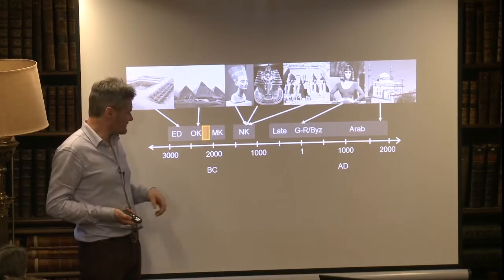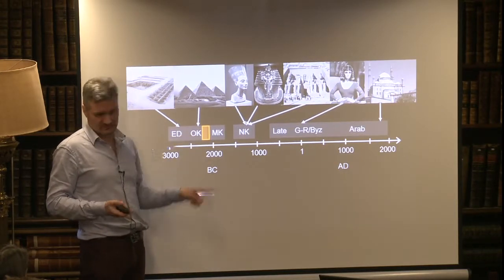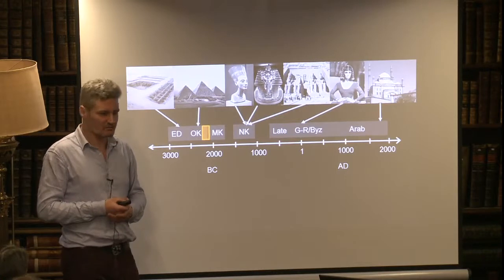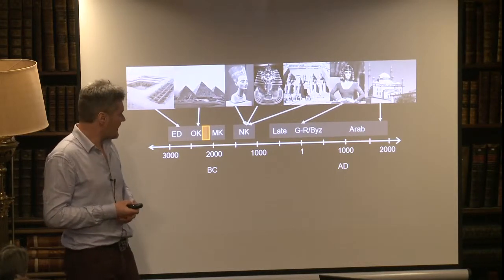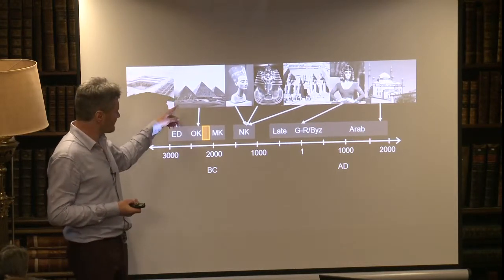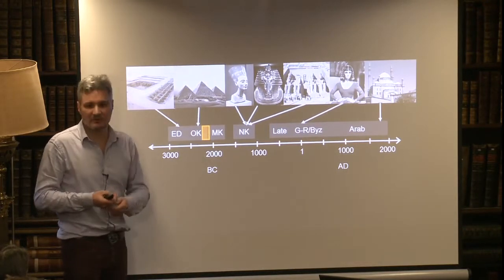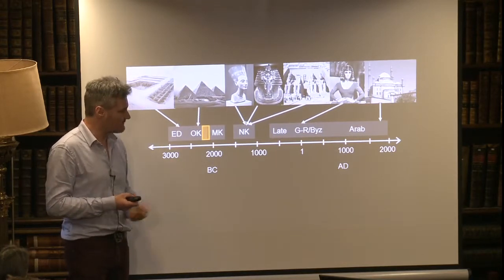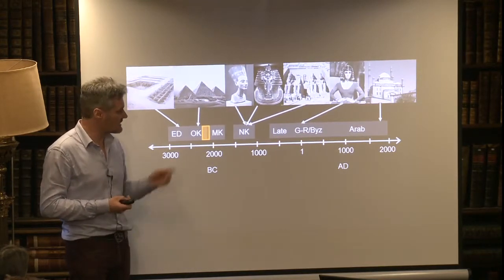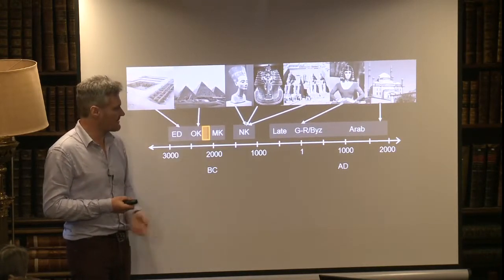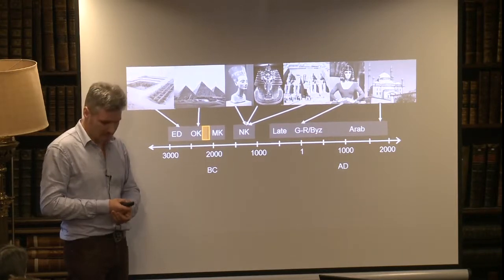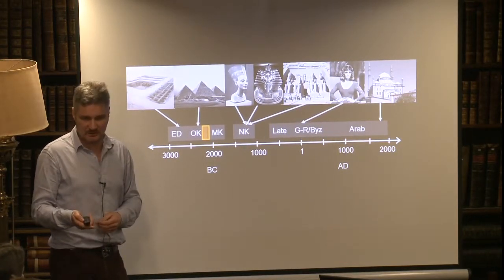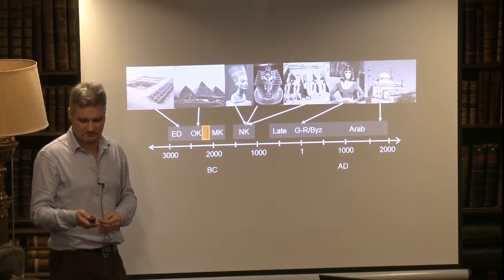What I'm going to talk about today is this first collapse of the Egyptian state at the end of the old kingdom. This is the period when they built the pyramids and so on — the earliest period of Egyptian history, which goes all the way through the more famous monuments of the new kingdom and later on through the Greco-Roman period.